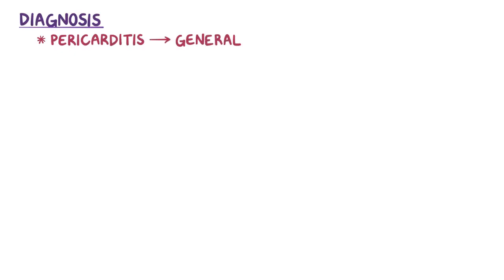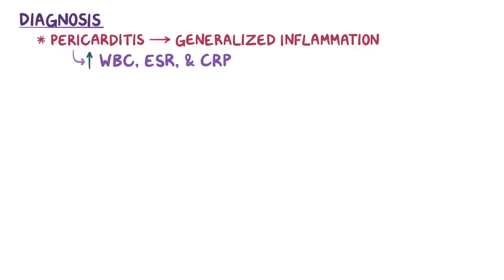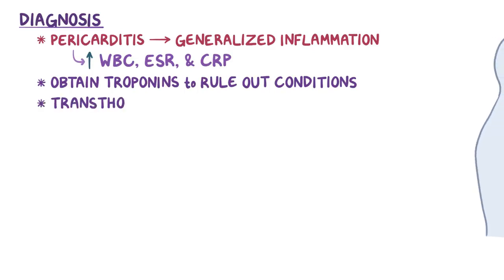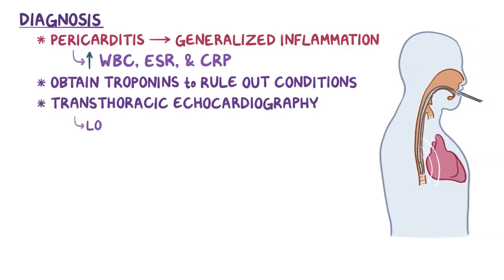Pericarditis also causes generalized inflammation, so there's often an elevated white blood cell count, ESR, and CRP. In addition, it's important to obtain troponins to rule out conditions like a myocardial infarction. Since pericarditis can lead to pericardial effusion, a transthoracic echocardiography is used to look for a pericardial effusion.